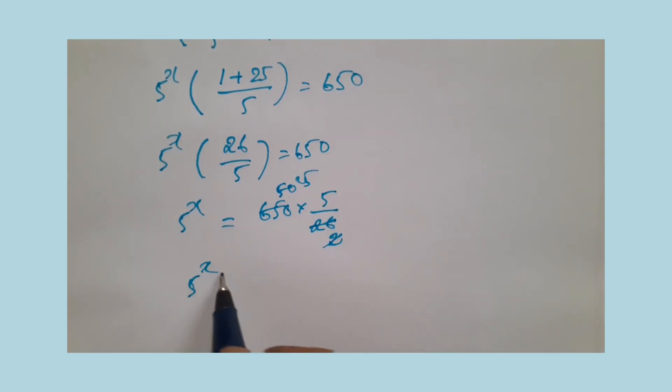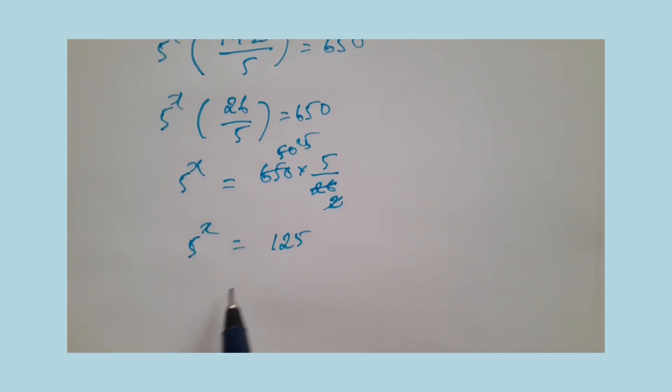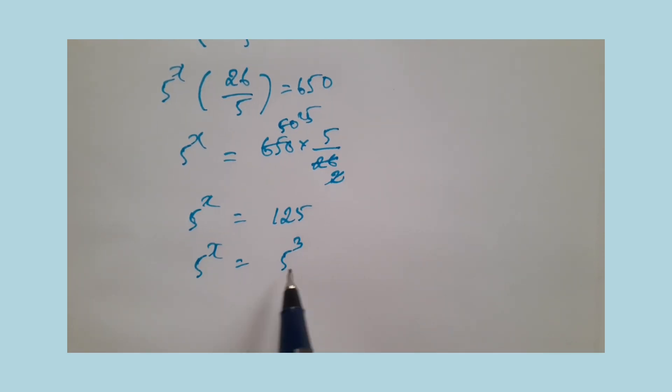5 power x equals 125, which is 25 times 5. Write this in exponential form: 5 power x equals 5 cubed. When bases are equal, powers are equal. Therefore, x equals 3.